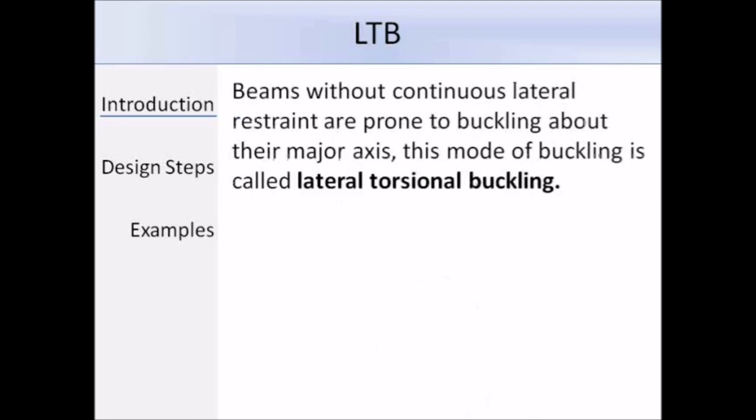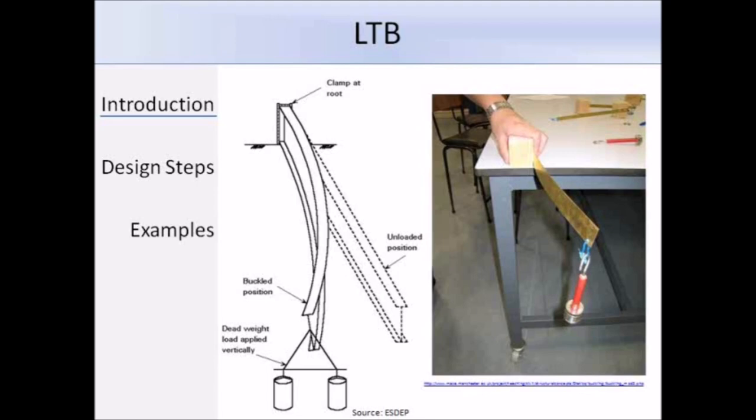The buckling mode described in the previous slide is known as lateral torsional buckling, or LTB for short, and it occurs about the major axis. To illustrate the effect of LTB on a cantilever, we have this diagram on the left which shows the unloaded position of the beam and the buckled position. The photograph on the right is a real-life model that shows the same buckle behavior as drawn in the diagram.